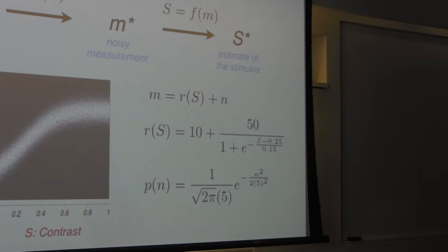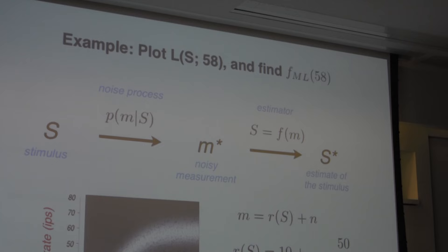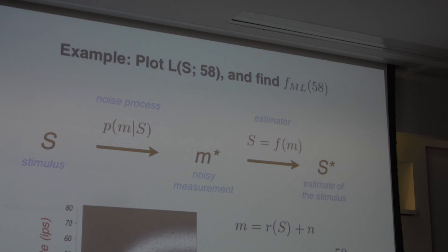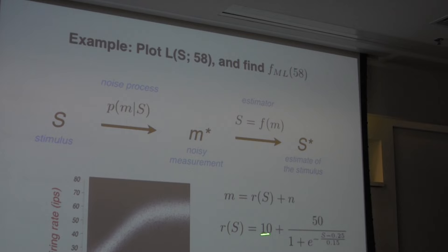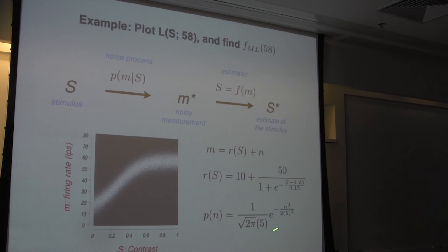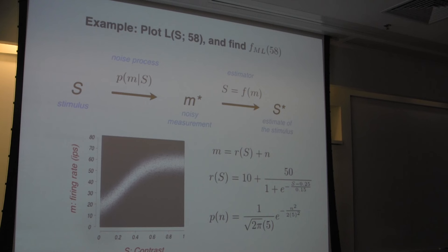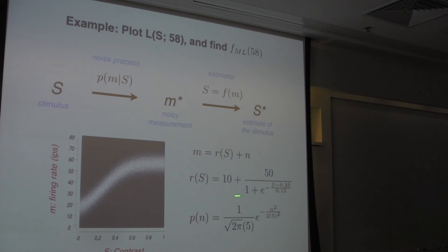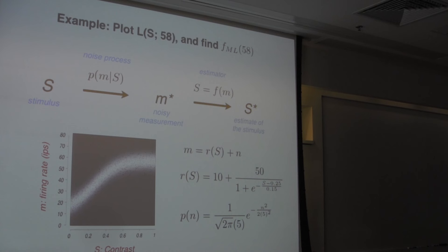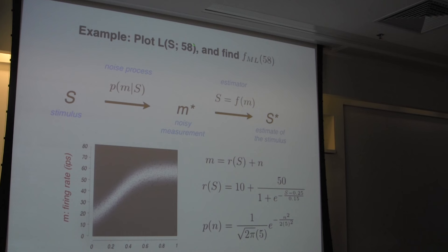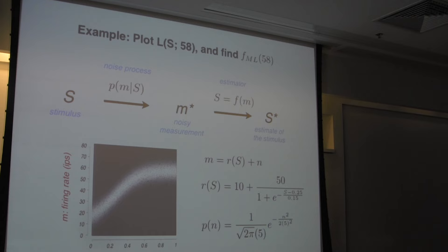So the goal here: let's say you really are recording from this neuron. You've already characterized its features — you know how it responds to the stimulus because you've made measurements several times, and the noise is well characterized by a Gaussian. You have a neuron fully characterized. Now, on a given trial, this neuron fires 58 spikes per second. What is your best guess of the stimulus? That's the problem we're trying to solve.